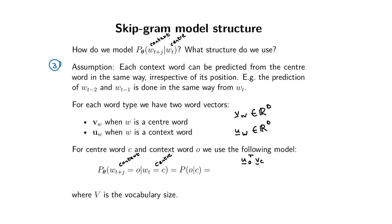Probabilities need to be positive, but the dot product can be between negative infinity and positive infinity. So we're going to take the exponential of that number, which gives a value between zero and infinity. We then need to ensure that if we sum up over all the different word types the context word can take on, this sums to one.